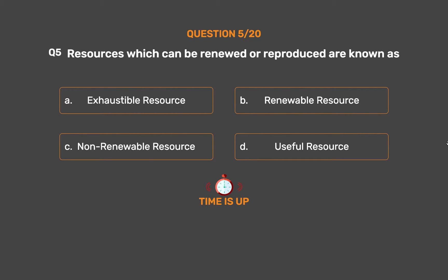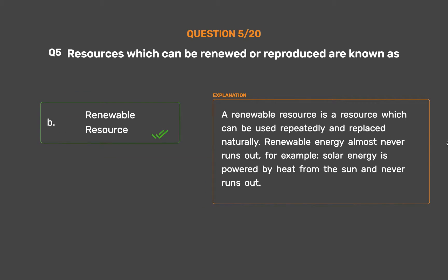The correct answer is Option B: Renewable resource. A renewable resource is a resource which can be used repeatedly and replaced naturally. Renewable energy almost never runs out. For example, solar energy is powered by heat from the sun and never runs out.